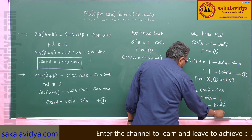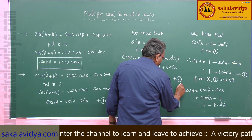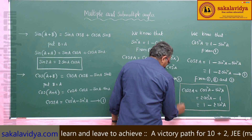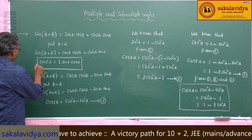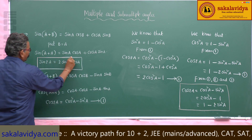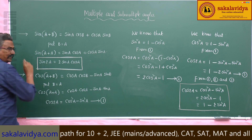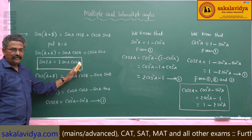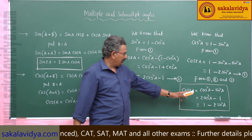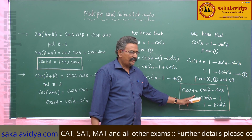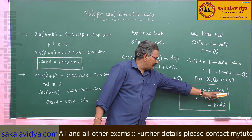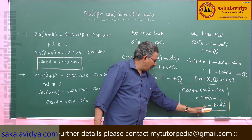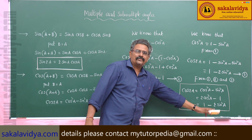Let me repeat once again: sin 2a equals 2 sin a cos a. And cos 2a equals cos²a minus sin²a, or 2cos²a minus 1, or 1 minus 2sin²a.